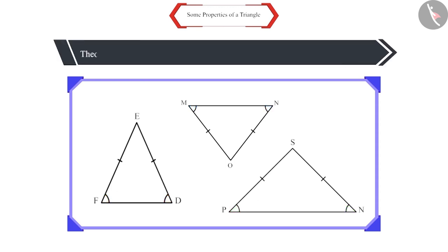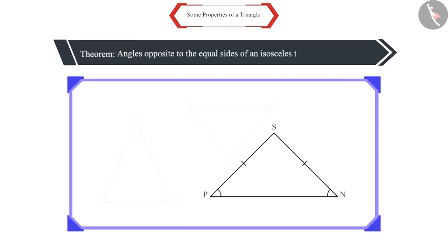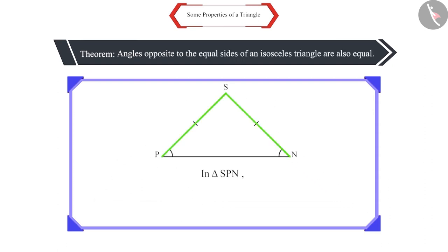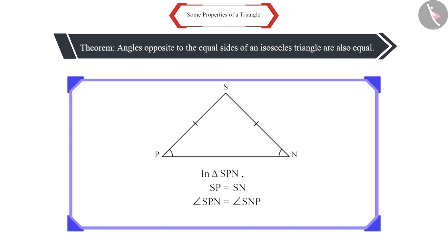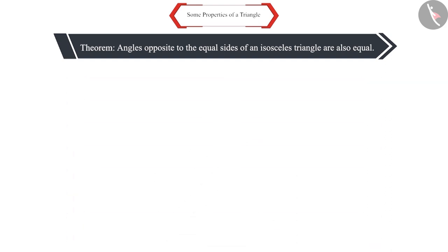We can write this as a theorem in the following manner. Angles opposite to the equal sides of an isosceles triangle are equal. This is an important result. This can be proved by several methods.